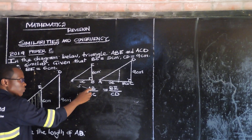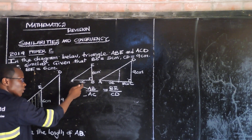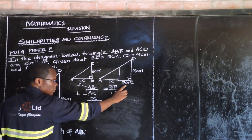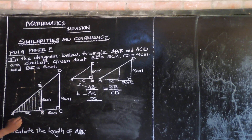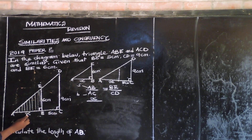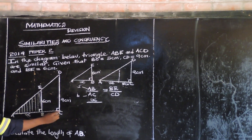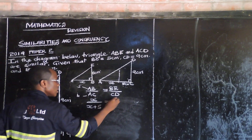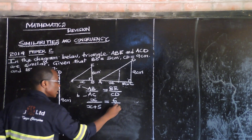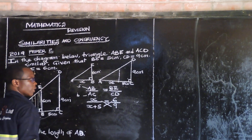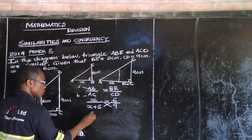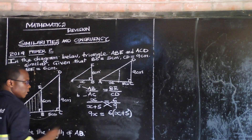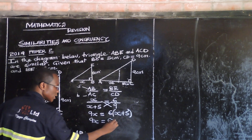So we want AB, which is X. We write: X over (X plus 5) is equal to BE over CD, which is 6 over 9. We apply cross multiplication: 9 times X equals 6 multiplied by (X plus 5). So 9X equals 6X plus 30.